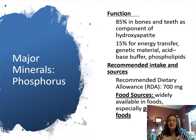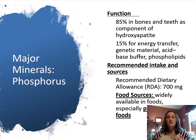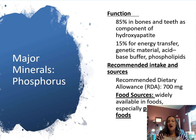Our next major mineral is phosphorus, which goes hand in hand with calcium. Phosphorus is found in 85% of bones and teeth as a component of hydroxyapatite. Hydroxyapatite functions in bones and teeth, but also in ATP, DNA, and RNA as an acid-base balance buffer. Food sources primarily come from protein-rich foods.